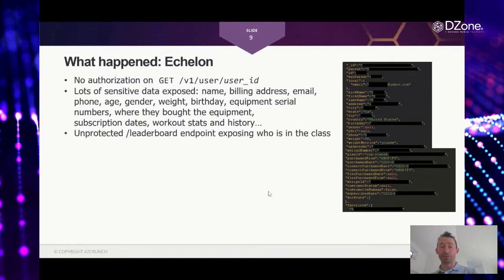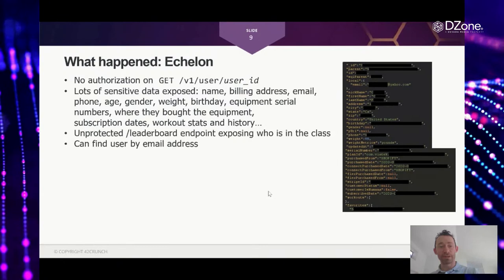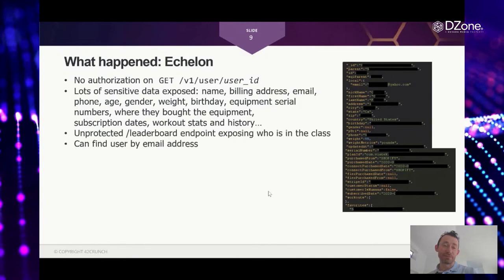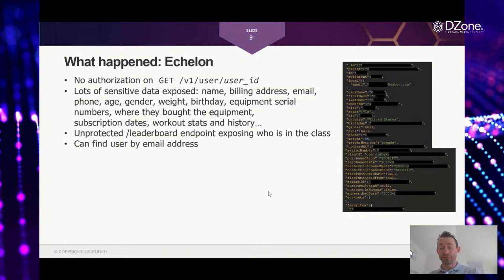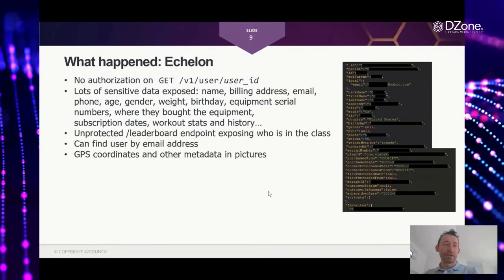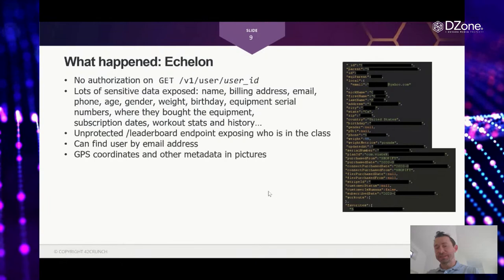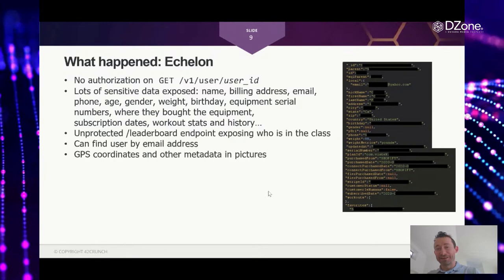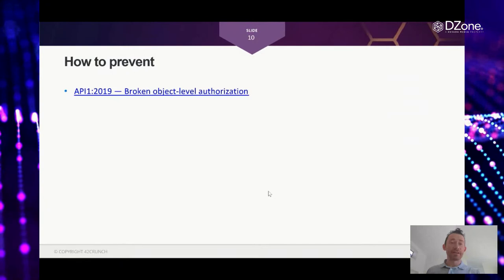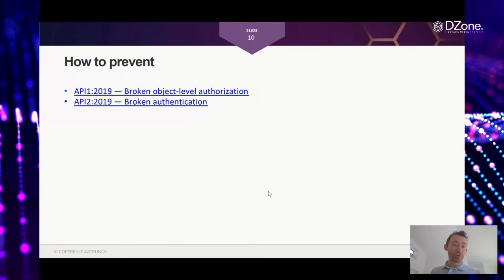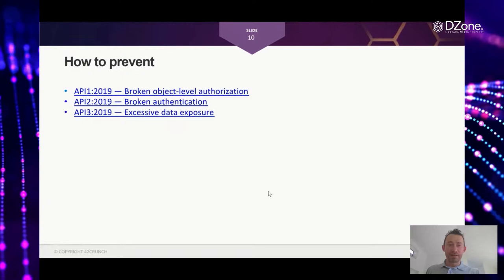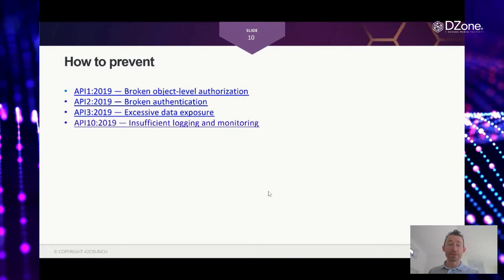With Echelon, the returned data was much more sensitive: you could get exact physical address, birthday, weight, equipment serial number, purchase location, and full workout history. There was also a leaderboard endpoint — used by the app to display class performance — that was completely unprotected, exposing class participation data. Another endpoint allowed finding users by email address, meaning if you knew someone's email you could get their user ID and then retrieve all their data. Furthermore, uploaded photos retained full metadata including GPS coordinates.